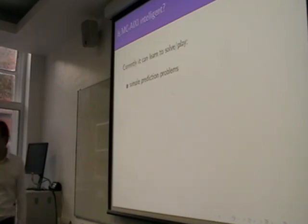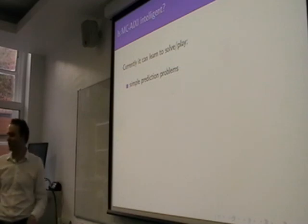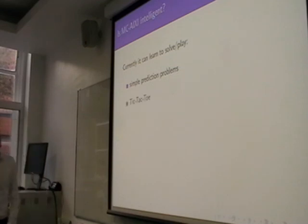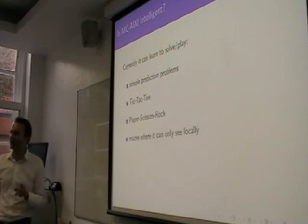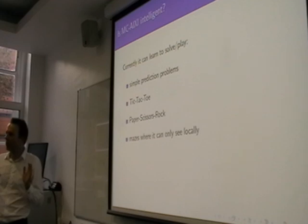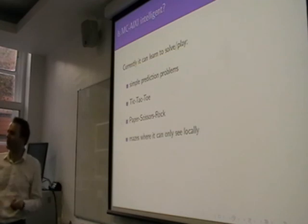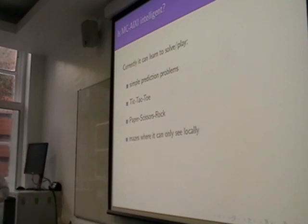So you can do simple prediction problems. Well, that's not really surprising. It's got a predictor built into it. It can learn to play tic-tac-toe. It can learn to play paper scissors rock. It can learn to find its way through mazes where it can only see locally. So it can't see the whole maze, and it's in some corridor, and it doesn't know, it has to actually walk down the corridor and mentally count how far it's gone in order to be able to know which decision to make at some point. It doesn't actually know its absolute location. How does it know that it's making progress in maze solving?